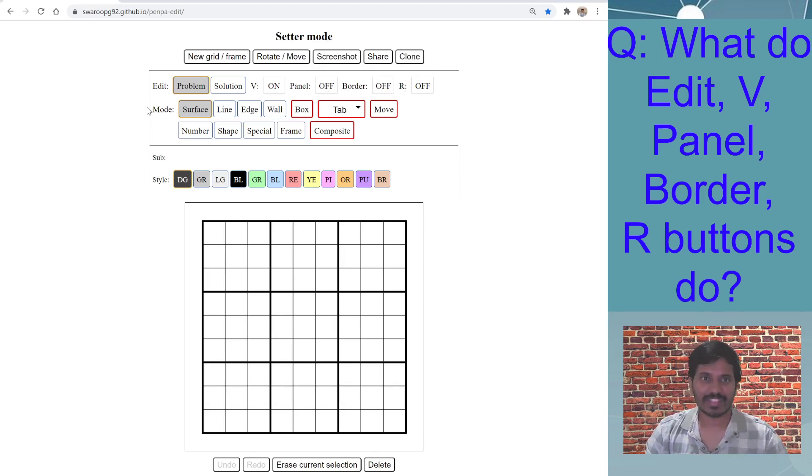Let's get started. The first set of buttons is Edit mode, and you will see it has Problem and Solution. Now this can be useful in two ways. The first is as a creator if you are trying to create a puzzle on the go using this tool.